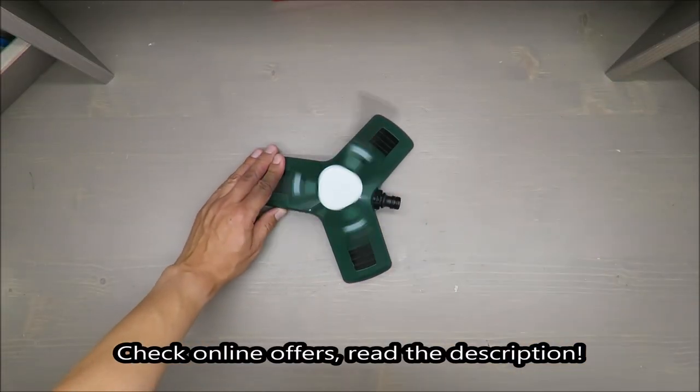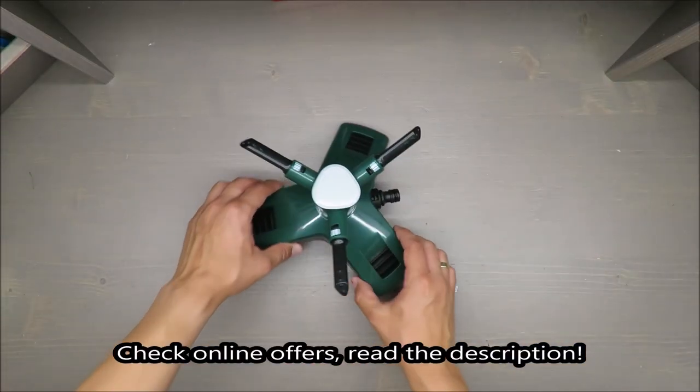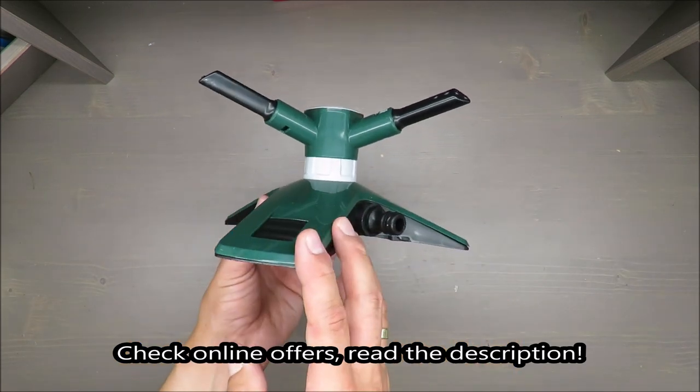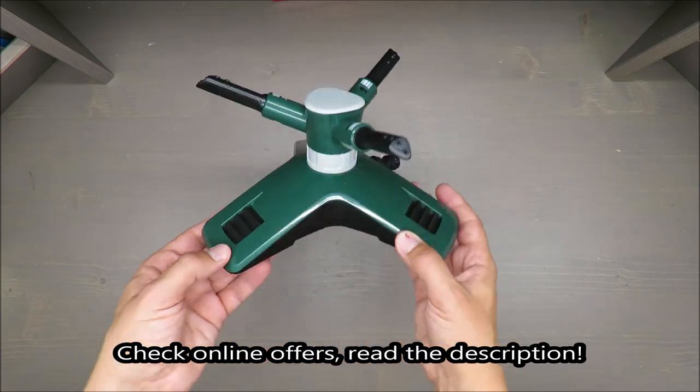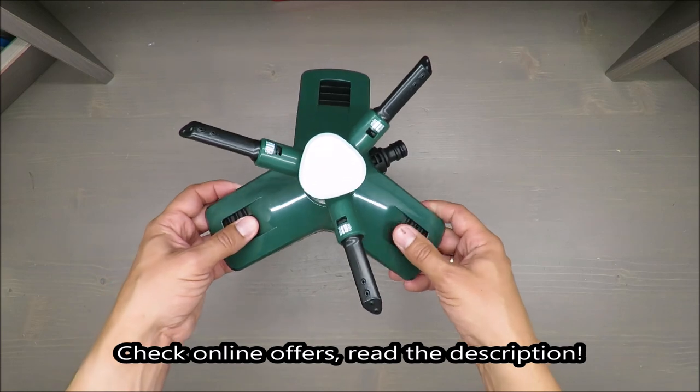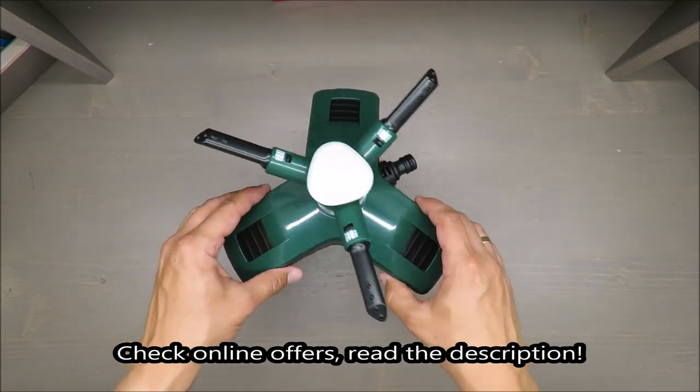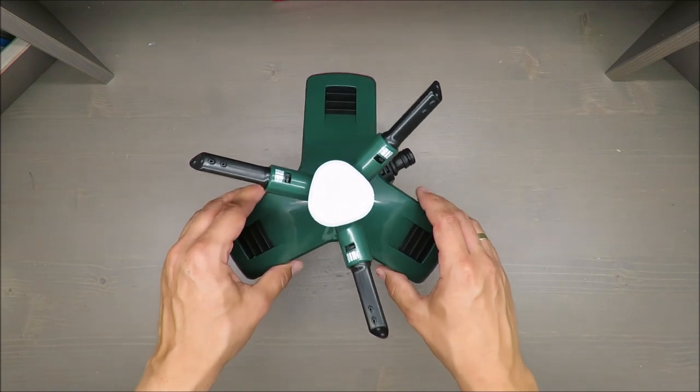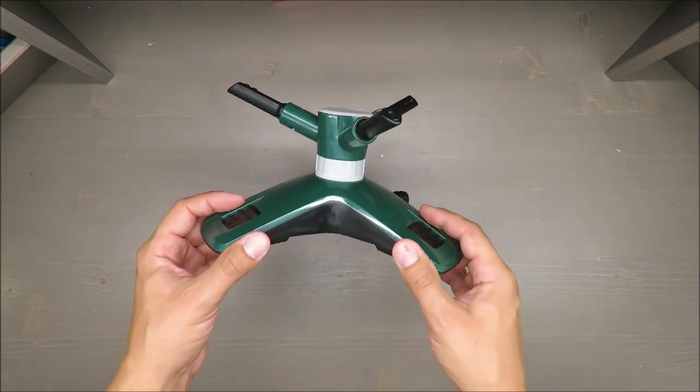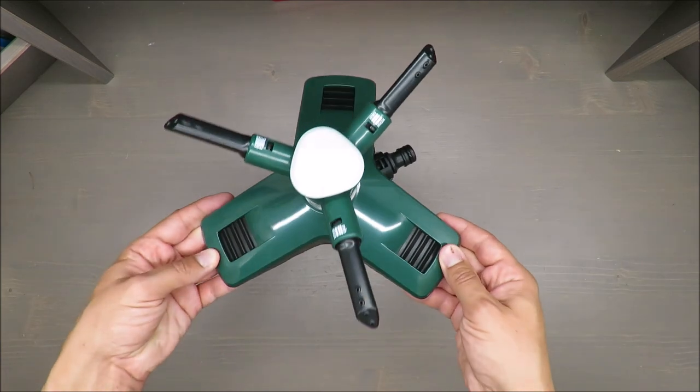Hello everybody, this is Out of the Box Unboxing. In today's episode I'm going to review and make a practical test of a very simple rotating sprinkler from Parkside, available at Lidl. On the beginning, my quick judgment is rather positive. If you want to know why, stay till the end of the video.